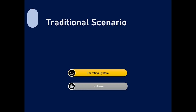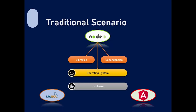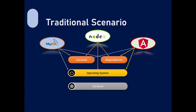We have an operating system which works on top of the hardware. Now if you want to use some applications — for example, Node.js — that particular application will have a requirement for a set of libraries and certain dependencies. You need to resolve all those dependencies, provide whatever libraries are required, and make certain changes to the OS if required. Similarly for another application like MySQL, you need to have certain libraries and resolve certain dependencies.